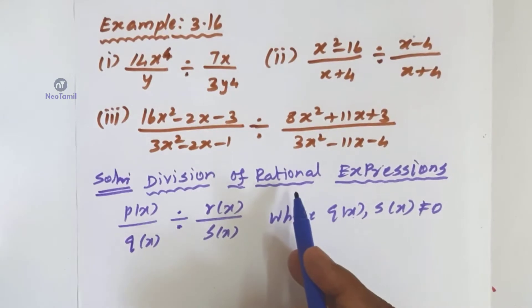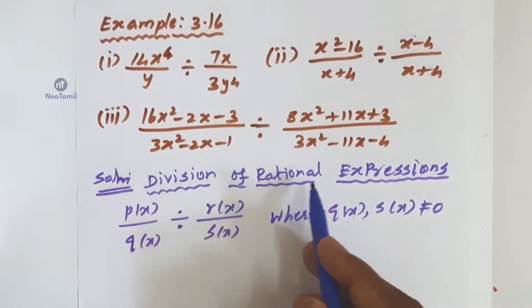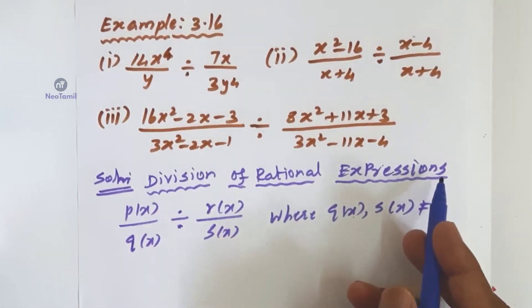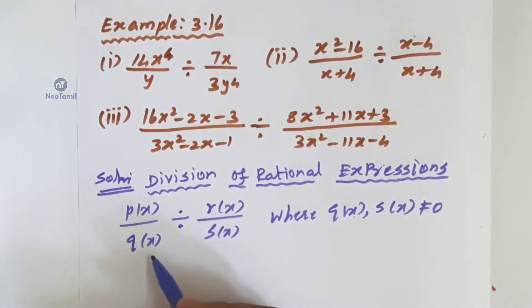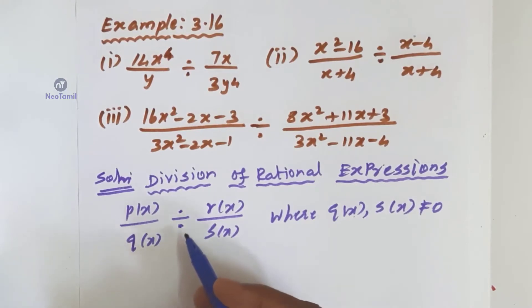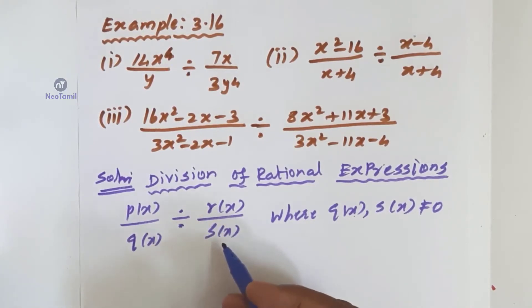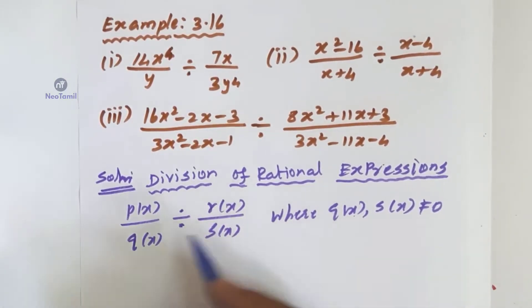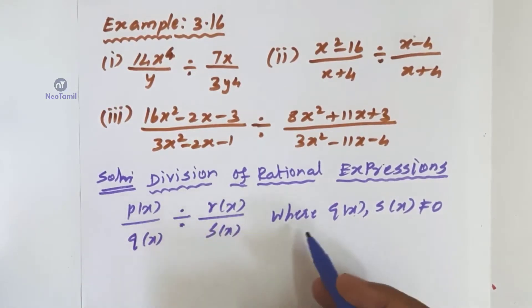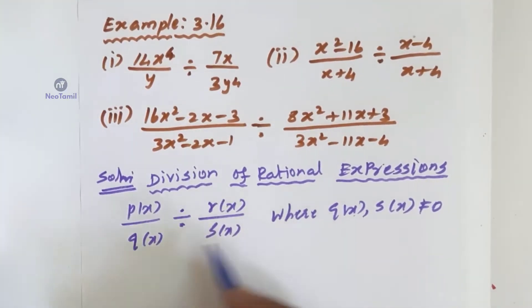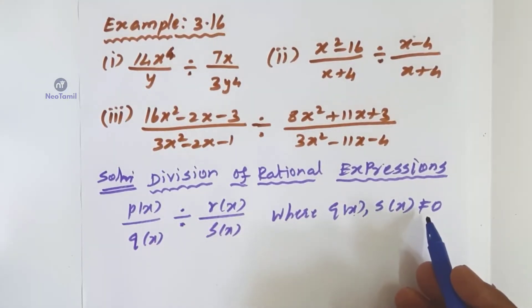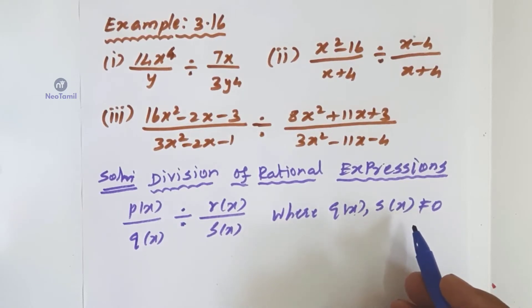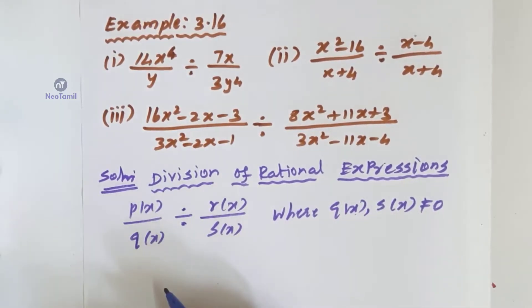The first concept is Division of Rational Expressions: P of X divided by Q of X, divided by R of X divided by S of X. For every rational expression, the denominator should not be equal to zero. If the denominator is zero, one of the rational expressions is undefined.